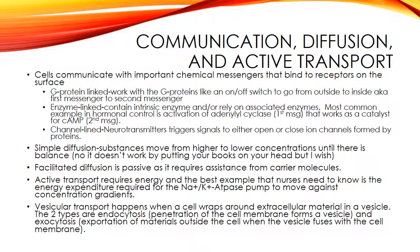Cells communicate with each other by chemical messenger systems. In some tissues, chemical messengers move from cell to cell through gap junctions without entering extracellular fluid. Other types of chemical messengers bind to the surface of intracellular receptors. Three classes of cell surface receptor proteins are G-protein linked, ion channel linked, and enzyme linked. G-protein links rely on molecules called G-proteins that work like an on-and-off switch to change external signals with a first messenger and internal signals with a second messenger.